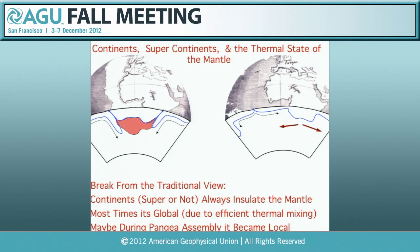You can also have periods where a supercontinent is assembled with no thermal anomaly developing below it at all. Originally we wanted to develop these scalings to explain discrepancies between different modeling groups. But it also leads to a specific prediction: if you're going to get a thermal anomaly below a supercontinent, you need to cut off that lateral mixing. One way to do it is to have subduction curtains around the supercontinent; another is to have the supercontinent become fixed relative to the mantle flow pattern.